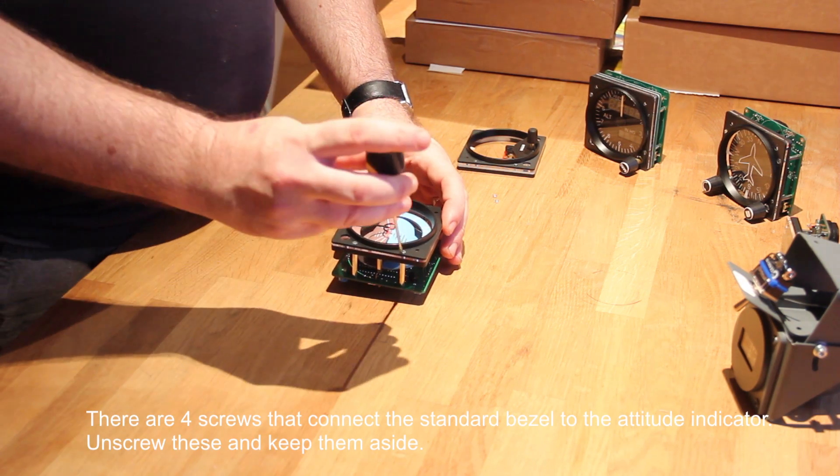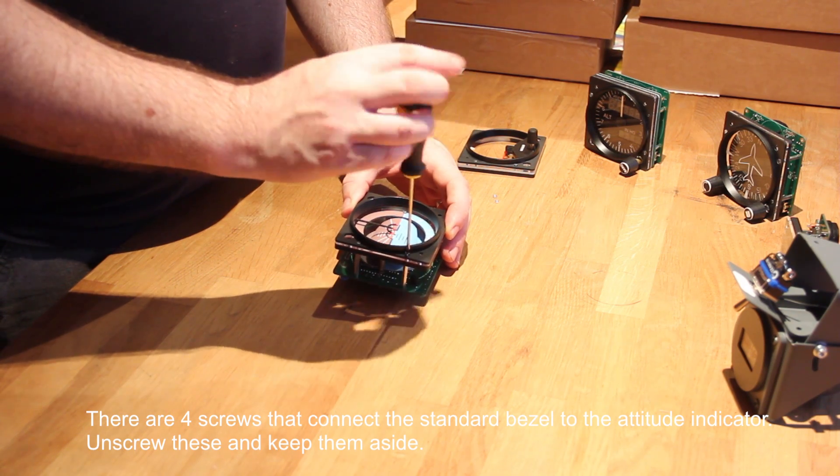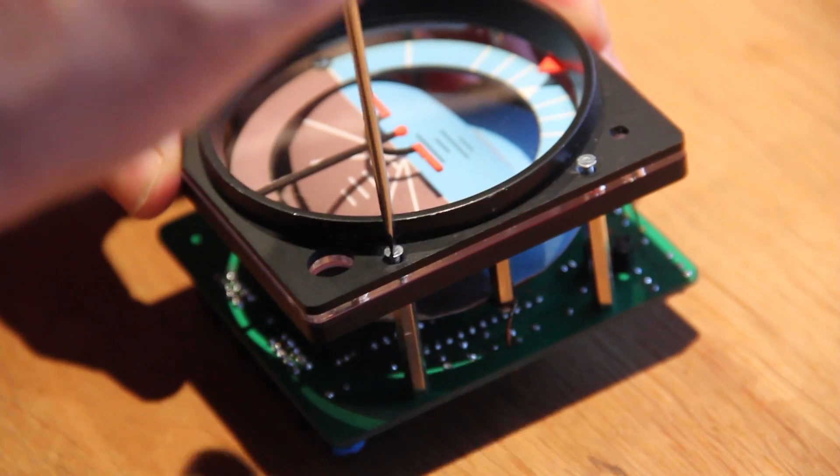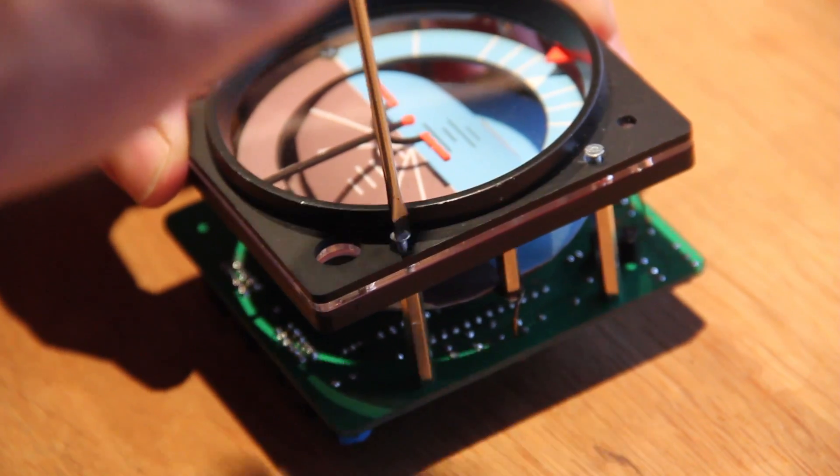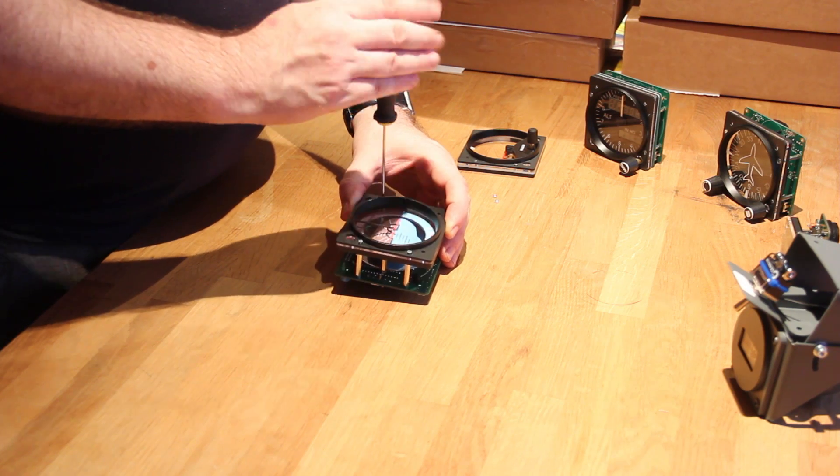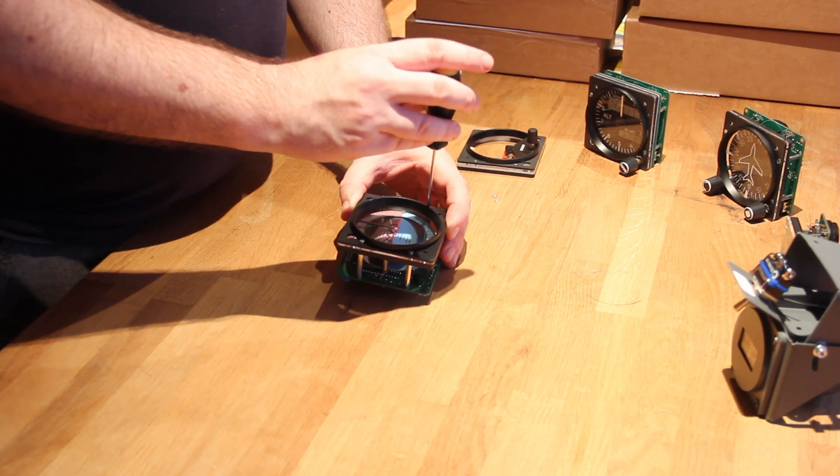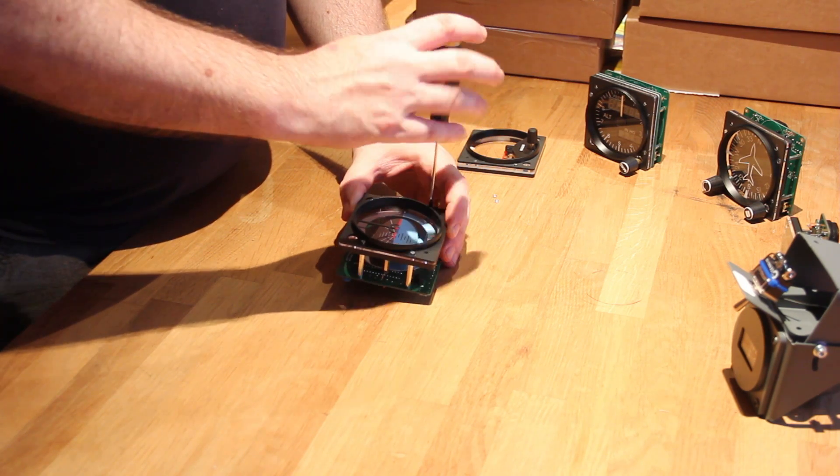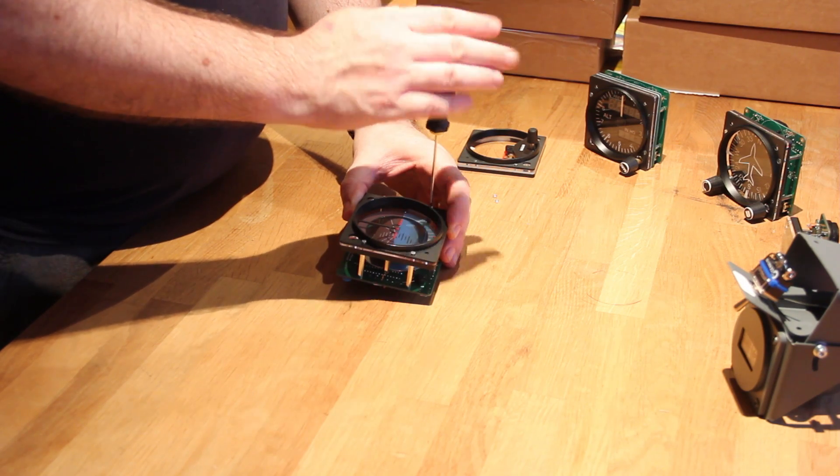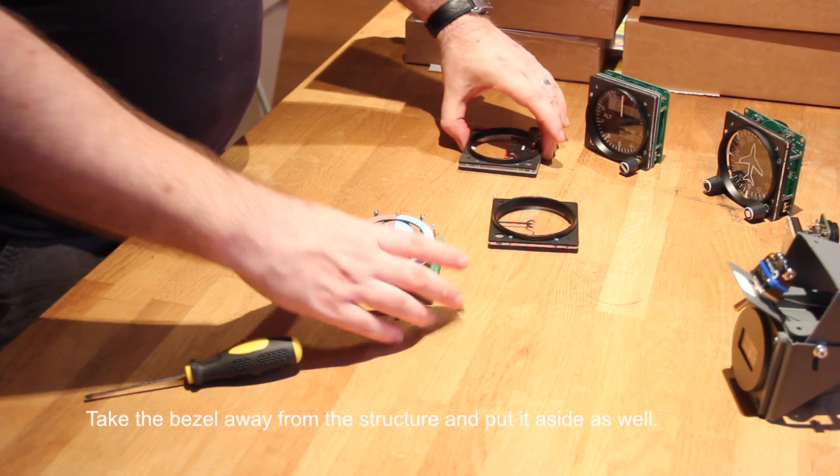There are four screws that connect the standard bezel to the attitude indicator. Unscrew these and keep them aside. Take the bezel away from the structure and put it aside as well.